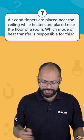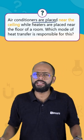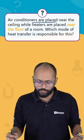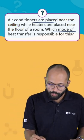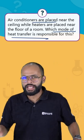Welcome to SCO Booster Shots. The question for today is: air conditioners are placed near the ceiling while heaters are placed near the floor of a room. Which mode of heat transfer is responsible for this?